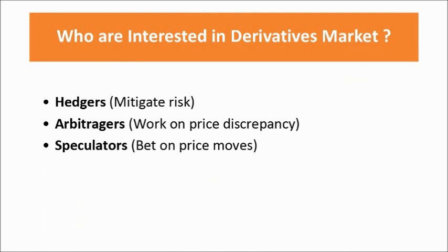An individual has a life risk, so he basically takes an insurance policy from an insurance company. The insurance company has a capacity to bear the risk of the individual, so it charges a premium and issues a policy, whereby the individual transfers his life risk to the insurance company. This is a simple example of hedging — a process by which you can mitigate the risk. We will see further examples using futures and options in future sessions.